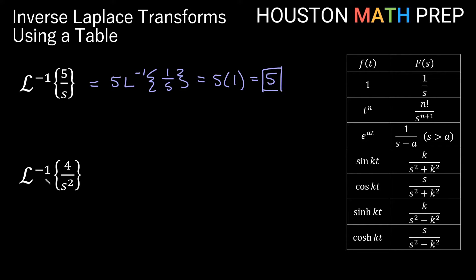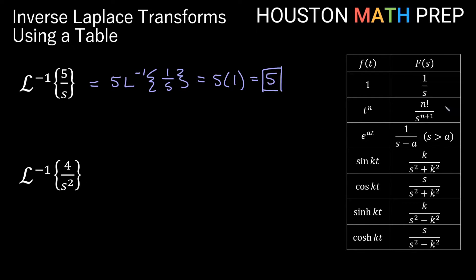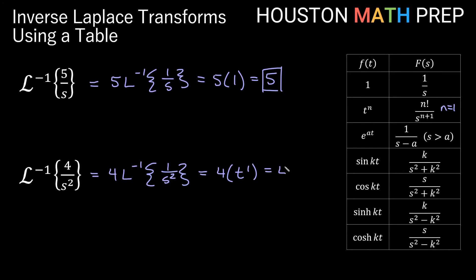Looking at our next one: the inverse transform of 4 over s squared. This fits the second row of the chart: t to the n, with n factorial over s to the n plus 1. Here n needs to be 1 to make s squared. That means the top needs to be 1 factorial, which is 1. So I bump the 4 out front: 4 times the inverse transform of 1 over s squared. With n equal to 1, that gives us 4 times t to the 1, which is just 4t.